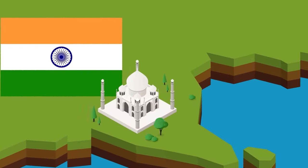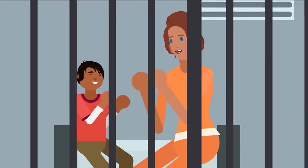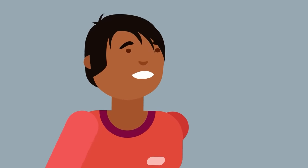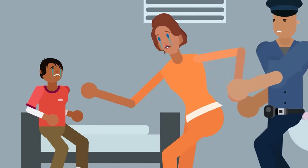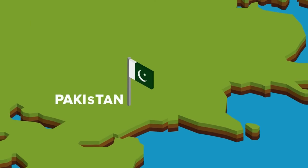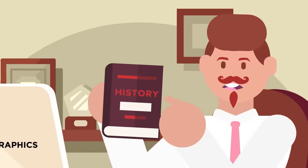For example, one death row inmate in India was pregnant when she was arrested and sentenced. She gave birth in prison, and her son stayed with her for six years. When the sentence was finally slated to be carried out, the boy was taken away by the state and given to a foster family. There have also been cases of children living with their mothers on death row in Pakistan and Uganda, so this wasn't an isolated event.